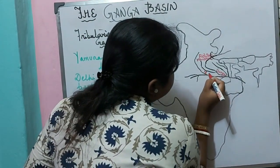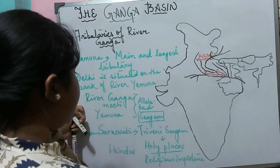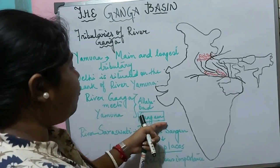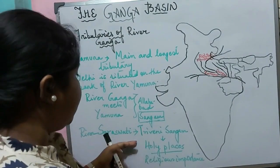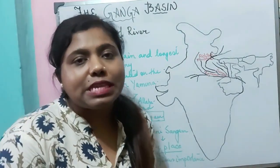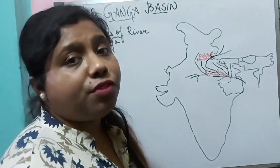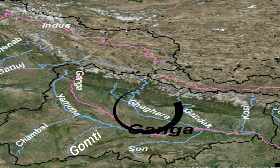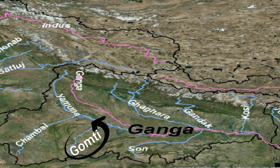The Triveni Sangam is a very holy place and of great religious importance for Hindus. River Yamuna is the main and longest tributary of Ganga. Now, many other tributaries join the mainstream other than Yamuna. The other tributaries that join river Ganga are the Ghaghra, the Gandak, the Kosi, the Gomti, and the Chambal.